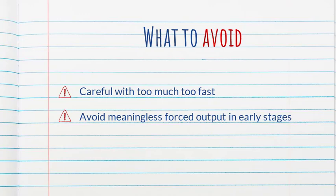The other principle important to keep in mind is to avoid meaningless forced output in early stages. The author doesn't say a lot about later stages or whether there are any benefits to meaningless forced output, but he is very clear that meaningless forced output — for example, choral repetition or simply copying words — could actually be detrimental to learning and knowing the words. Evidence from studies shows that when learners are first exposed to words and asked to copy or repeat them, and then asked what the word means, they perform worse than students who didn't have to copy the words. It makes sense, because students asked to copy words were probably so concerned with copying that they were not paying any attention to the meaning, making them less likely to remember what the word meant later on.